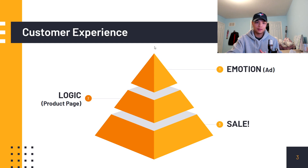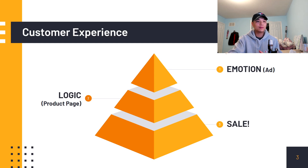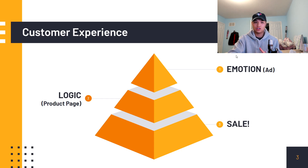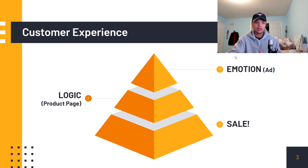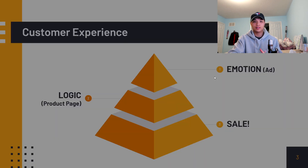For content, when you're making your product page you have to keep in mind that people buy with emotion and justify their purchase with logic. So the job of your video ad is to create this emotion, and the job of your product page is to provide the necessary information to complete their purchase through logical reasoning.